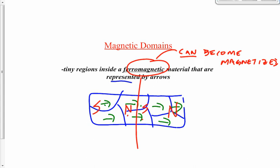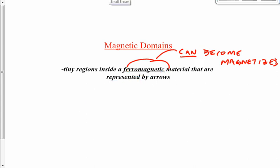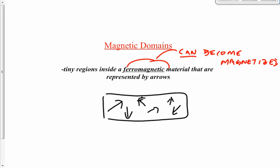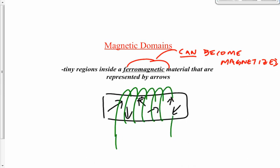The other way to produce a magnetic effect in a non-magnetized ferromagnetic material, besides bringing another magnet nearby, is to wrap wire around it and connect it to a battery or power supply. That causes an electric current through the wire, which generates a magnetic field. That magnetic field will magnetize the material — those domains pointing in random directions all start pointing in the same direction, so now we've got a magnet. You've probably done this in elementary school.